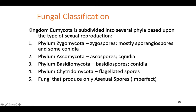Zygomycota is a very common fungus — known as black bread mold — and is a pathogen for insects. Ascomycota contains many pathogenic species, penicillin, mold, mildew, and edible morels. Basidiomycota includes the stereotypical mushrooms you're familiar with. Chytridiomycota are pathogenic fungi that cause disease in amphibians and are exclusively aquatic — unique for fungi, since almost all fungi are terrestrial. Some fungi cannot produce sexual spores and are known as imperfect fungi — they can only produce asexual spores.